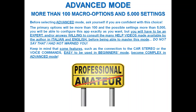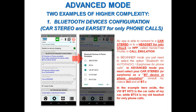Keep in mind that some features easy to use in beginner mode — such as car stereo connection or voice commands — become very complex in advanced mode. For example, for Bluetooth car stereo or HFP phone-call-only headsets, you must select the Bluetooth for auto-radio option, then find the option 'BT device in phone emulation' and set your device there. In this example, BTW8372 is the car stereo and BTC4 is an old phone-call-only headset. Refer to videos 3B3 and all BT.x videos.